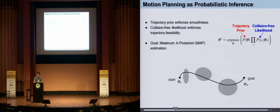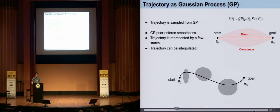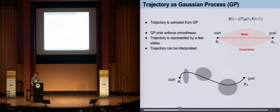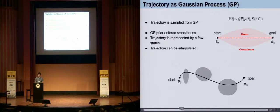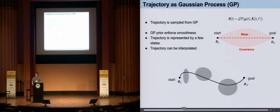The first key tool we use to speed our approach is Gaussian process. By compactly representing a trajectory using Gaussian process, we get the advantage that a proper Gaussian process prior will naturally enforce the smoothness property of a trajectory. In our implementation, we use a constant velocity Gaussian process prior to minimize the trajectory acceleration.